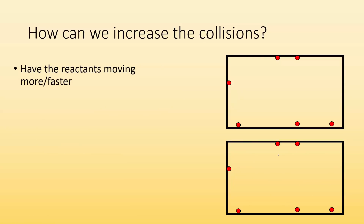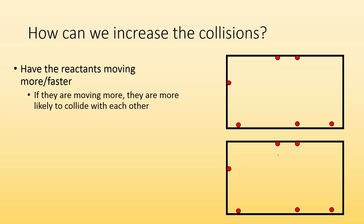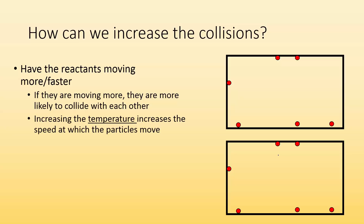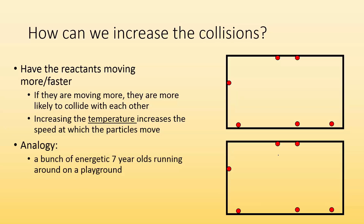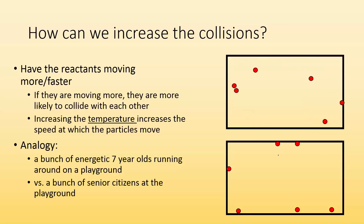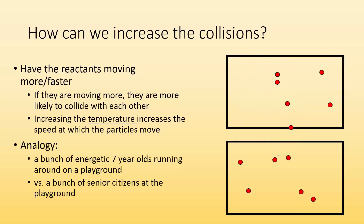You can also have the reactants moving faster by increasing the temperature. If they're moving more, they're more likely to collide with each other. Think of a playground full of energetic seven-year-olds versus senior citizens moving slowly — the seven-year-olds have far more frequent collisions. So higher temperature means more collisions and a faster reaction.